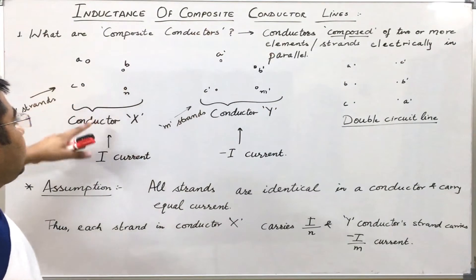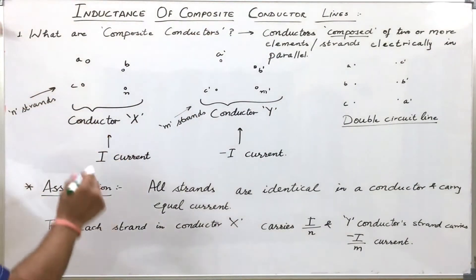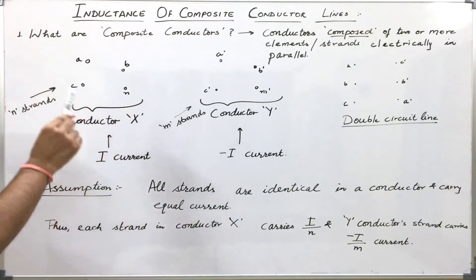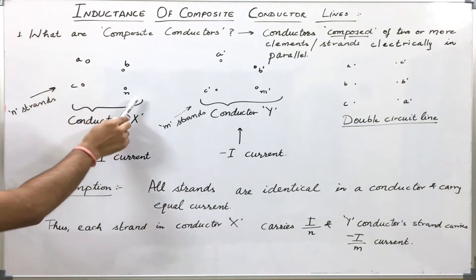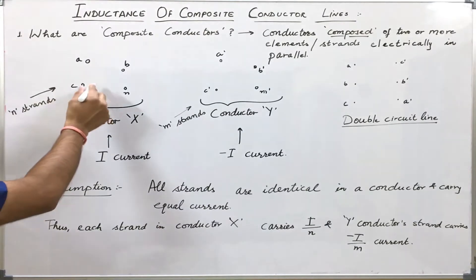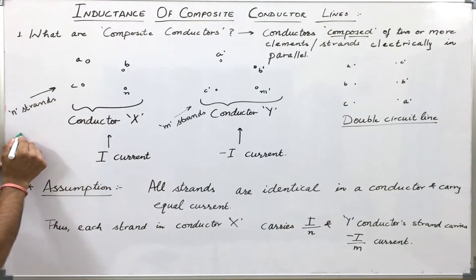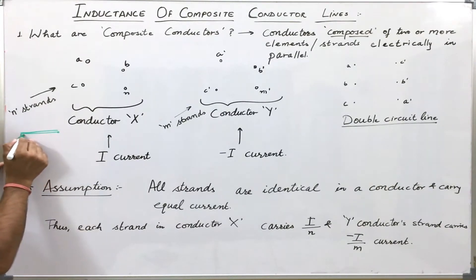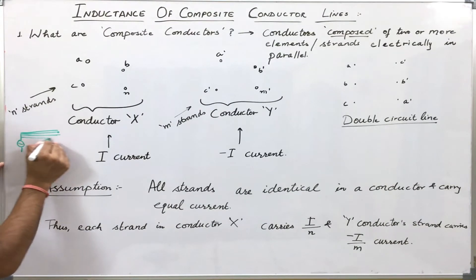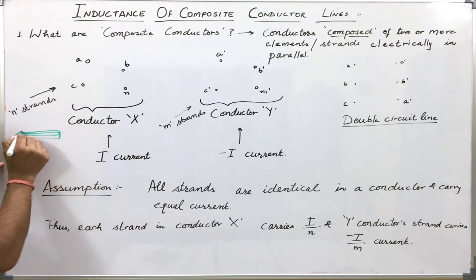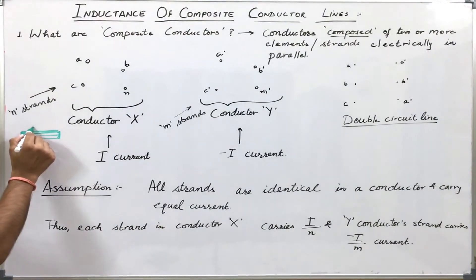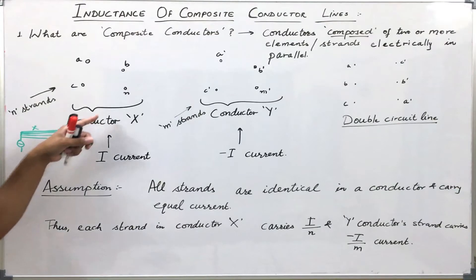For example, let us see this conductor X. Let us say it is having N strands: strand A, B, C up to N. These strands will be connected in parallel. At one point, the source will be connected to this conductor and all these strands of this conductor are being connected here. So we can see that all these strands of the conductor are electrically in parallel. So this conductor X will be a composite conductor.